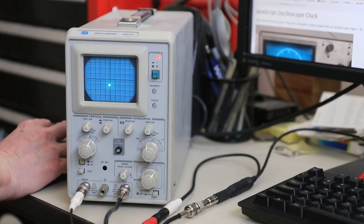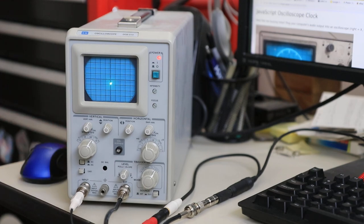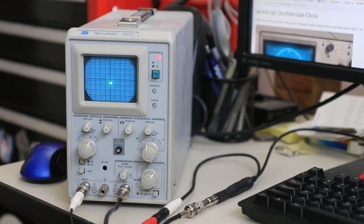And then, for example, here's Neil Frazier's JavaScript oscilloscope clock. Let's see how that works. How about that?